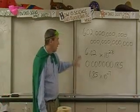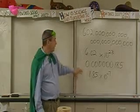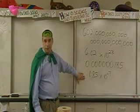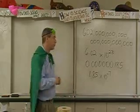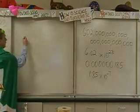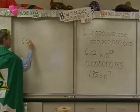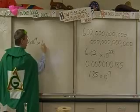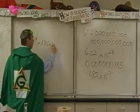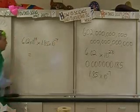So we have these two numbers. A really big number, a really small number. And we show them in scientific notation. Now, let's see how it looks if we want to multiply those two numbers. Well, we would say 6.02 times 10 to the 23rd times 1.85 times 10 to the negative 7th. And that equals.